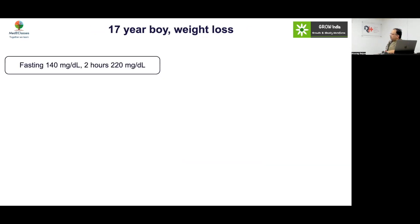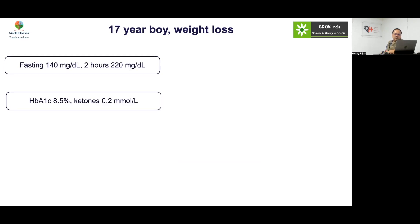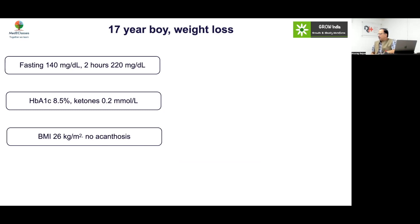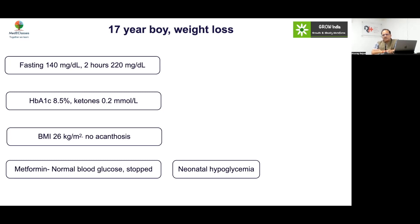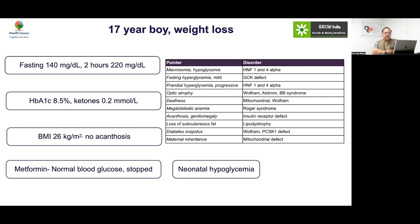Case 11: A 17-year-old boy with weight loss, fasting 140, 2-hour 220, HbA1c 8.5, ketone negative, BMI 26. Blood glucose normalized and metformin was stopped. There was a history of neonatal hypoglycemia. HNF1-alpha and HNF4-alpha are known to cause macrosomia and hypoglycemia in the newborn period, followed by subsequent development of diabetes. Think of HNF4-alpha — these patients respond dramatically to sulfonylurea and are exquisitely sensitive to it, so start at a very low dose.